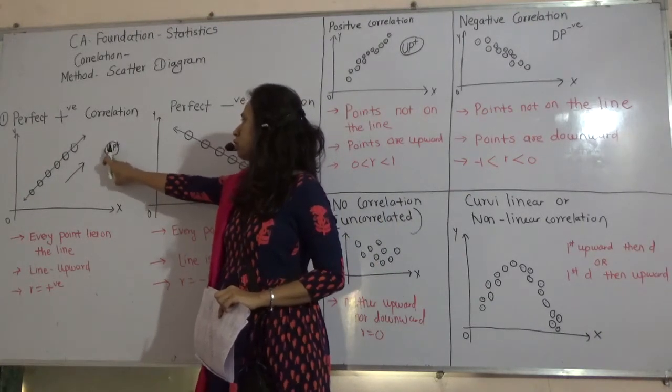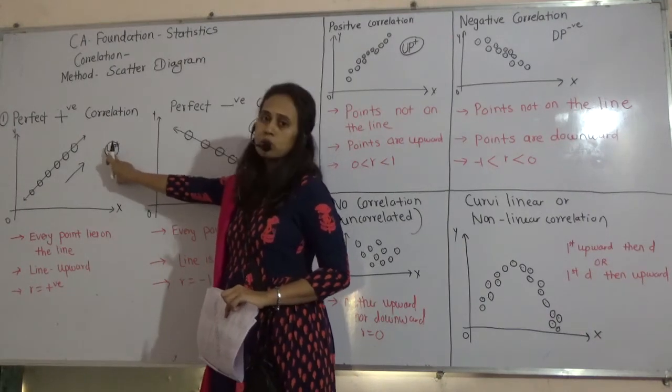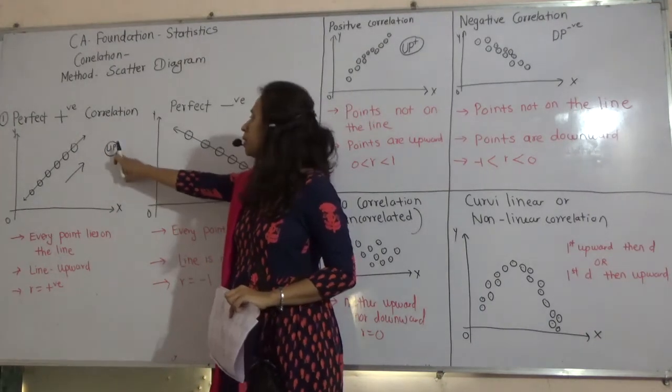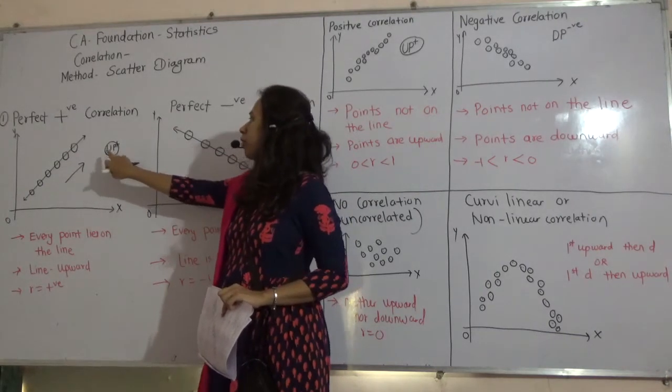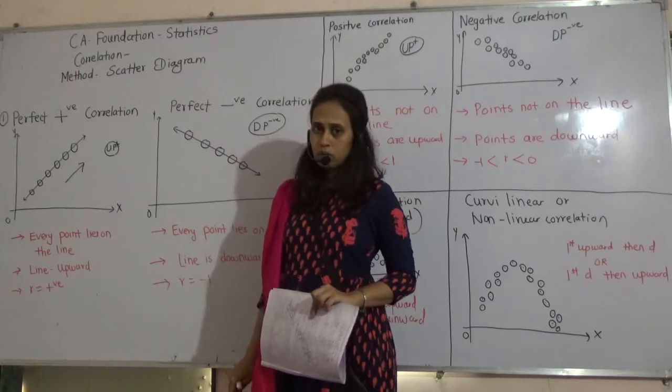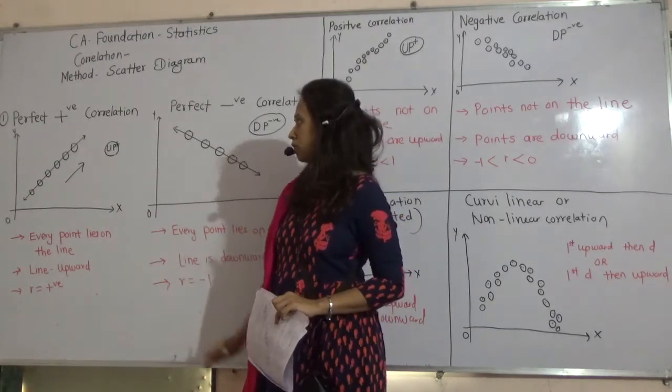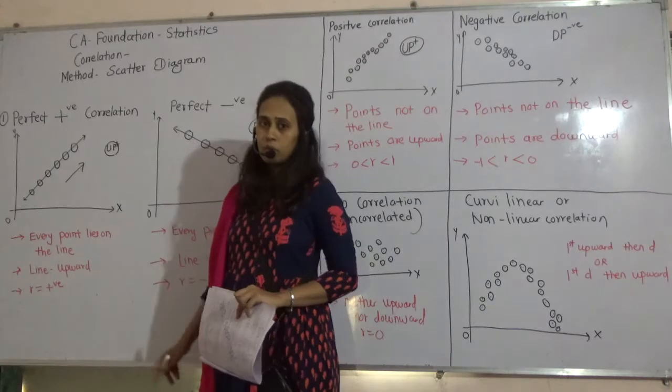And features of every point lies on the line. See, you can see each and every point is on the line. And it is upward slope and R is positive. Just to remember it, you can say U, P positive. U stands for upward. P stands for perfect positive. So, when perfect positive correlation comes, U, P, it will be upward slope. And R is positive.